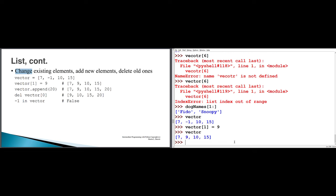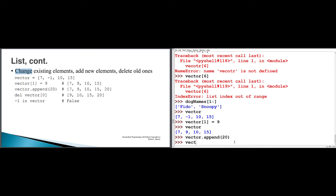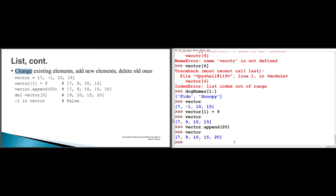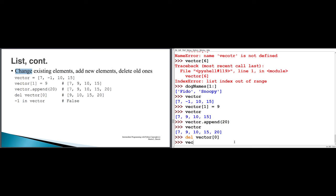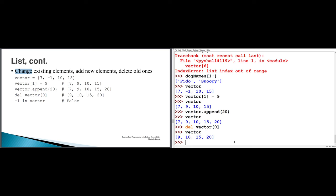The list data type has 11 named functions: append, insert, index, sort, reverse, and several others. If I say vector.append(20), that puts 20 at the end of the vector. You can also delete individual items using the del command — del vector[0] shortens the vector by removing what used to be its first item.